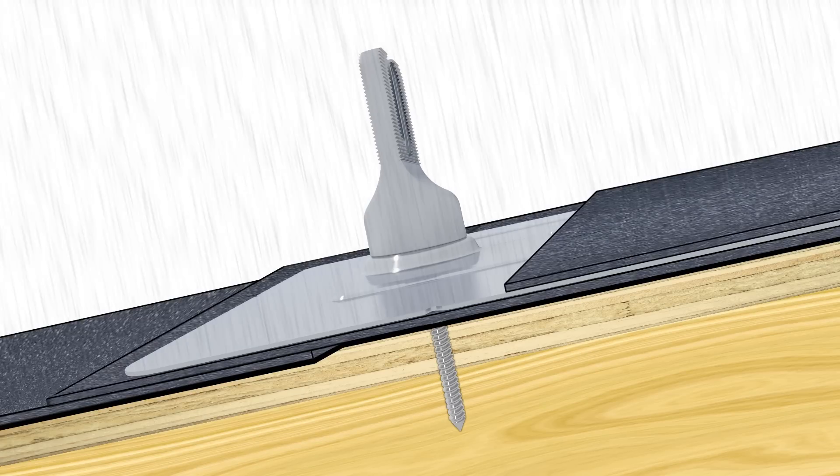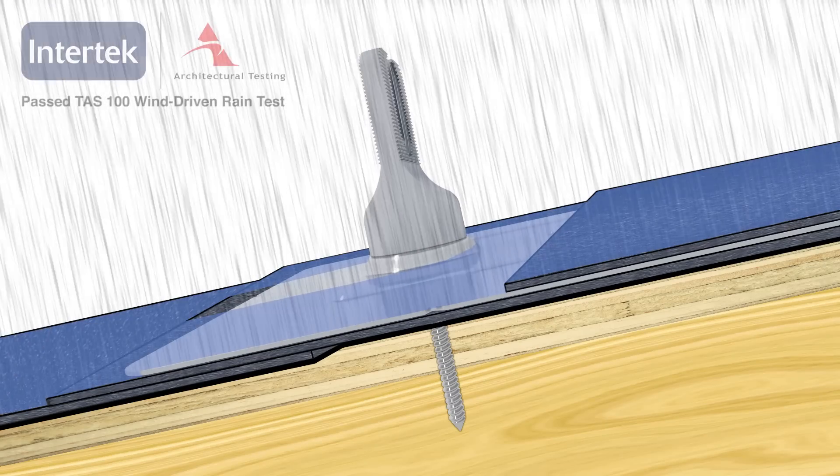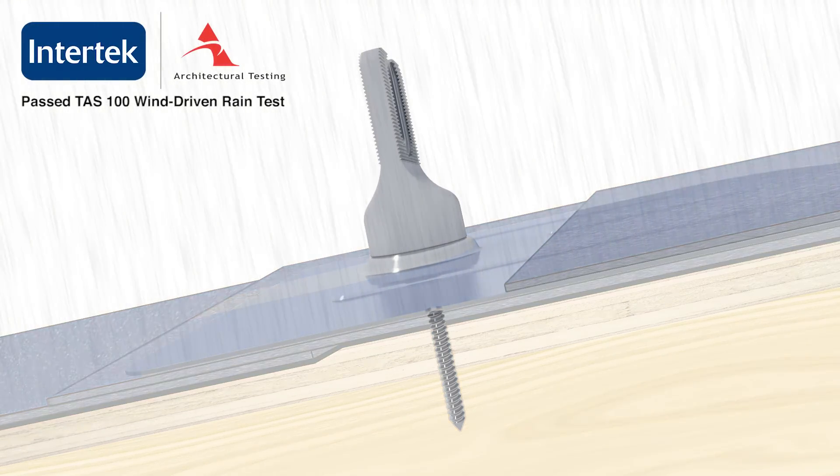With the redundant protection of an elevated and encapsulated water seal, Flashfoot II is the only solar attachment to pass the TAS-100 wind-driven rain test.